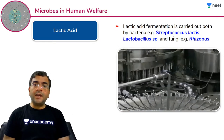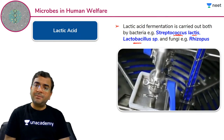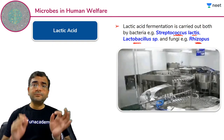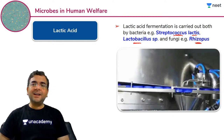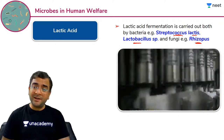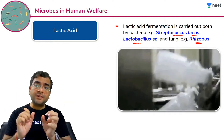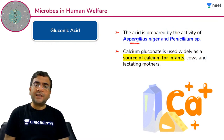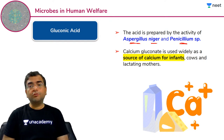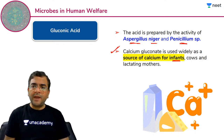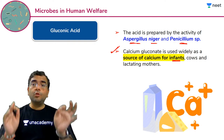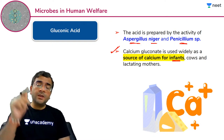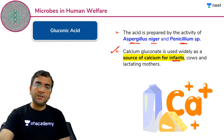Lactic acid fermentation carried out by bacteria Streptococcus lactis aur Lactobacillus se bhi banaaya jaata hai. Rhizopus naami fungi bhi lactic acid ka production karta hai. Lactic acid hamare muscles mein deposit ho jaaye toh muscular cramp ho jaate hain; otherwise medicines mein use kiya jaata hai. Kai probiotic drinks mein lactic acid hota hai jo hamare gut ke liye achhe maane jaate hain. Gluconic acid — yeh bhi Aspergillus niger ki activity se produce hota hai. Calcium gluconate ko calcium source ke roop mein infant, cows aur lactating mothers ko diya jaata hai.